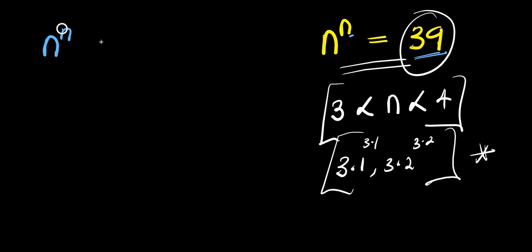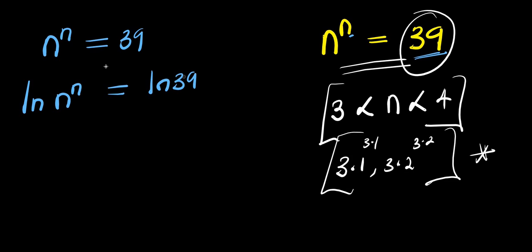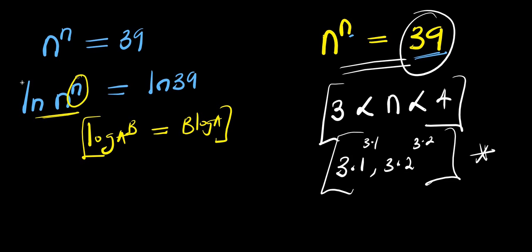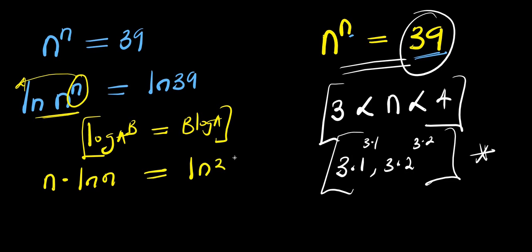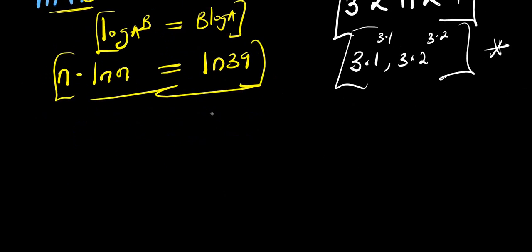So we have n to the power of n equals 39. To make use of the Lambert W function, first and foremost, let's apply the natural log. We have ln of n^n equals ln of 39. Applying the logarithm property — log of a to the power of b equals b times log a — the n comes in front: n times ln(n) equals ln(39).